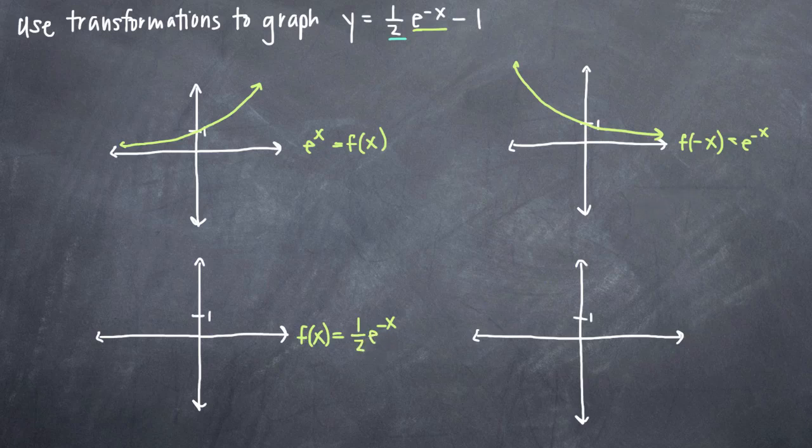So instead of the graph intersecting the y-axis at one, it needs to intersect at one-half. And every y-coordinate will be half what it is. So if this y-coordinate here, for example, were four, our new y-coordinate here will be two, y equals two. So we just shrink by a factor of two.